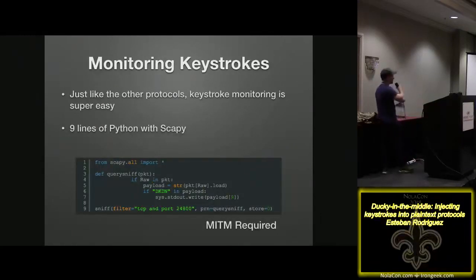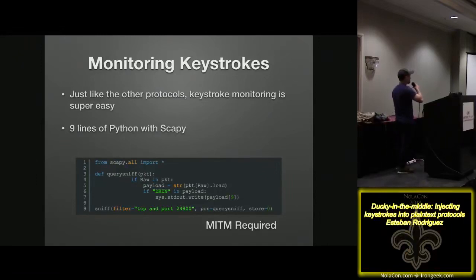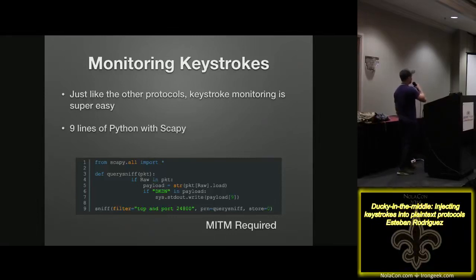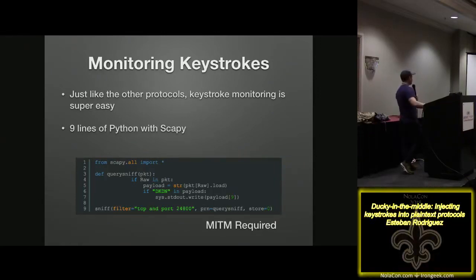When it came to monitoring keystrokes for Synergy basic, it was super easy. I have nine lines of Python using the Scapy library. It sniffs all TCP traffic to the default port 24800, looks for the 'dkdn' string which is the key-down indicator, and just prints out whatever character is typed. That's really all you need to start sniffing keystrokes if someone's using Synergy.